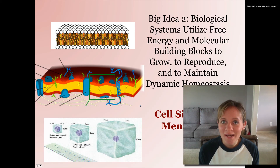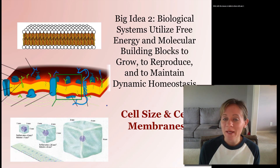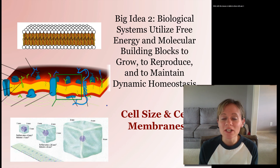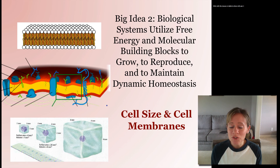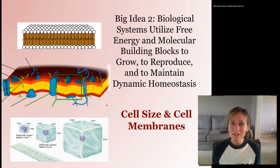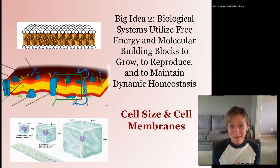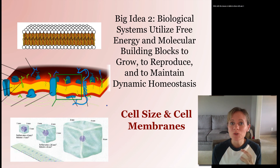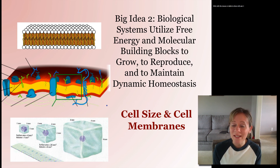Hi class and welcome to this first screencast on our next unit of Cells. We're still sticking with Big Idea 2 and Big Idea 4, building on the idea that all living systems need energy and matter from their environment. In the first unit we looked at macromolecules and how organisms get nutrients from the environment. Now we're going to apply these same concepts to cells — how do cells get energy and matter, and how do subcellular components work together so the whole cell functions properly, and later how cells function with one another.